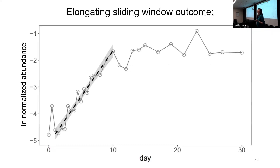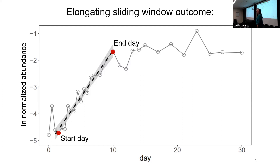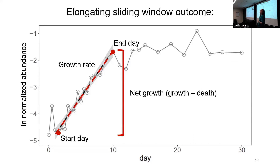Here's our example again — this is what my algorithm decided was probably the best guess for when this species was growing. From this one regression we can actually get quite a bit of information: when the start and end of growth were, the growth rate based on the slope of the regression, and an indication of the net growth of that organism — the difference in abundance at the end versus the beginning. It's important to note that this isn't just growth — it's growth minus death, because death can be happening simultaneously. It's just when growth exceeds death that it appears to be growing.